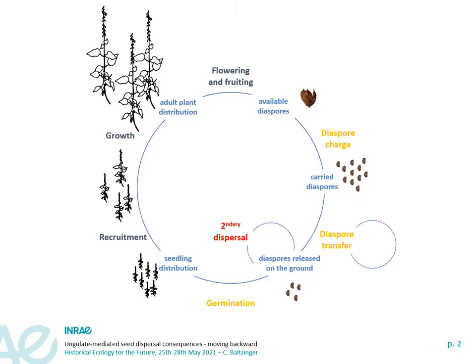First of all, I want to introduce the plant life cycle: adult plants produce fruits and then seeds that will be dispersed and released on the ground. They will germinate, produce seedlings, and then another adult plant that will close the loop and produce new fruits and seeds.